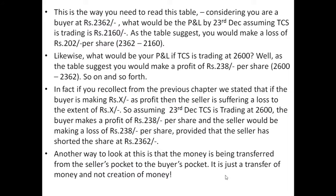What would be your profit and loss if TCS is trading at rupees 2600? As the table suggests, you would make a profit of rupees 238 per share — calculated by subtracting 2600 minus 2362. From the previous chapter, we stated that if the buyer is making rupees X as profit, then the seller is suffering a loss of rupees X. So assuming on 23rd December TCS is trading at rupees 2600, the buyer makes a profit of rupees 238 per share and the seller would be making a loss of rupees 238 per share, provided the seller shorted at rupees 2362.